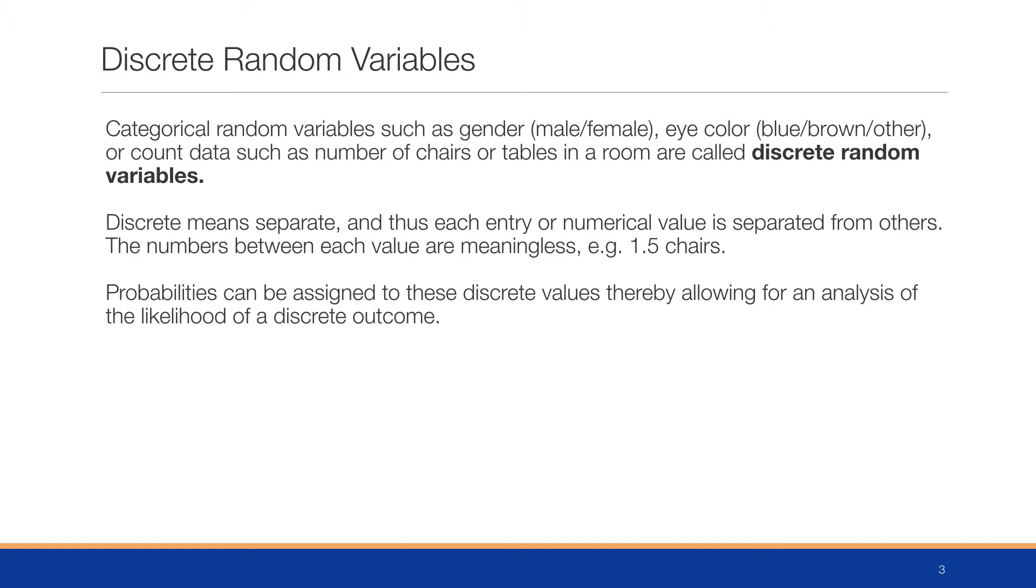A discrete random variable is a categorical random variable such as gender, eye color, or the count of number of chairs. Discrete means separate, thus each entry or numerical value is separated from the others. The numbers between each value are meaningless, like 1.5 chairs or the average of 2.3 kids. These values are discrete, small countable numbers, and probabilities can be assessed for discrete values.